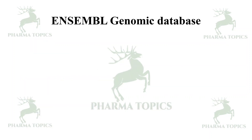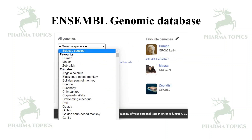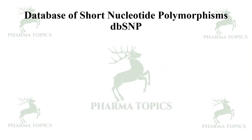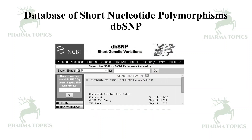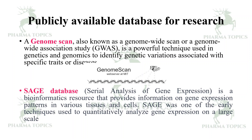The Ensembl genomic database contains the genomes of different species and is widely used for research. The dbSNP database covers short genetic variations — all single nucleotide polymorphisms of different genes can be utilized from this database.